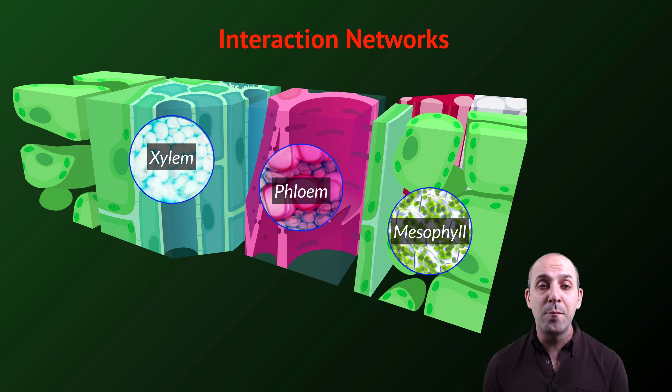The interactions among these components of the plant at the cellular level give rise to the systems that we discussed in the previous slide, and the interactions among those systems give rise to the system of the plant as a whole. That's what we mean when we say that biology is a study of interaction networks. At every level of organization, it's the patterns of interactions that lead to the properties that we observe.